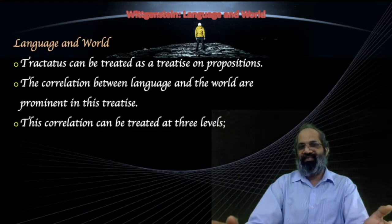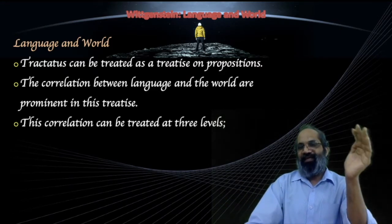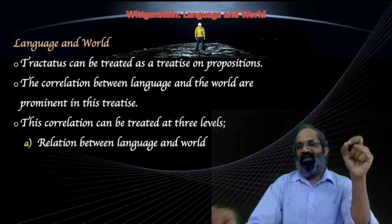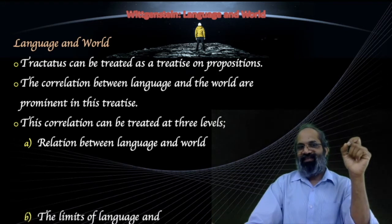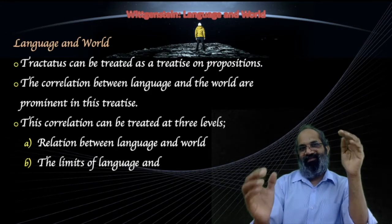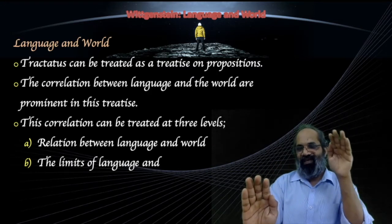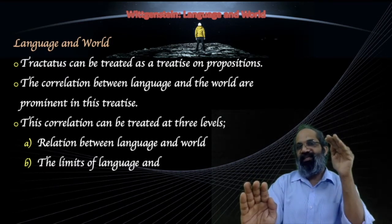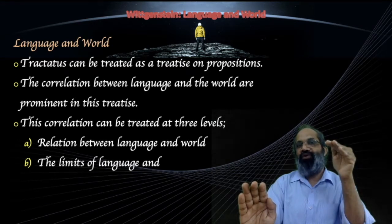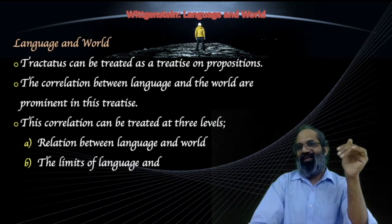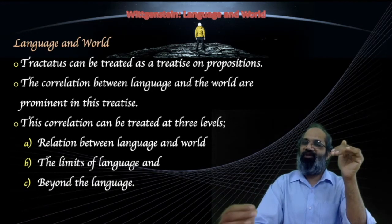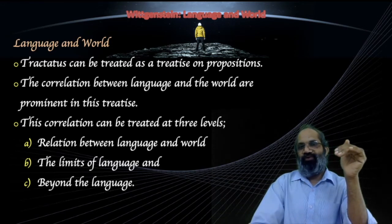This correlation can be treated at three levels. The first is the relation between language and world. The second is the limit of language — you can represent reality using language, but there is a limit for language, and what that limit does to the world is the second question. And thirdly, the aspects that are beyond language. The Tractatus deals with all three of these aspects, which we will be looking into one by one.